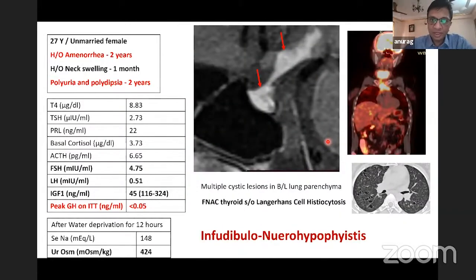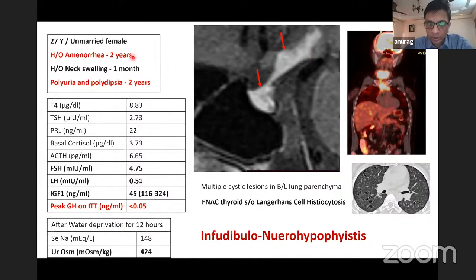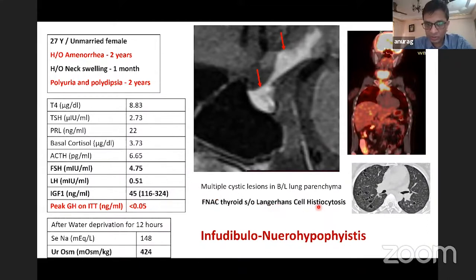This case illustrates posterior or infundibulohypophysitis presenting with gonadotropin, diabetes insipidus, and growth hormone axis involvement. There was also a diffuse goiter where FNAC suggested Langerhans cell histiocytosis. This is a case of infundibulohypophysitis preferentially involving the gonadotropin and growth axis.